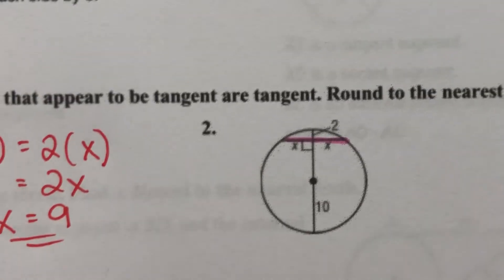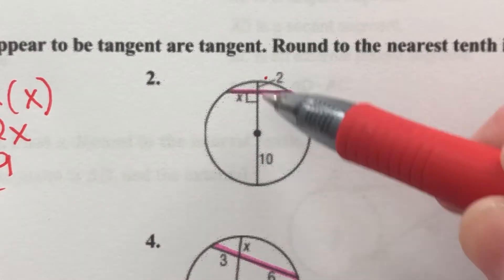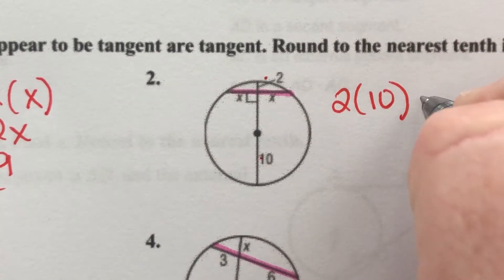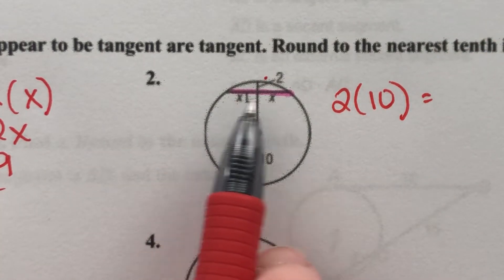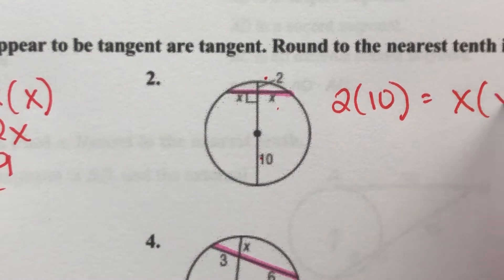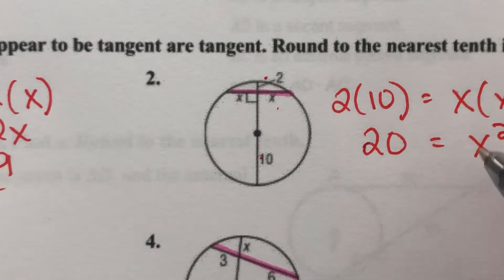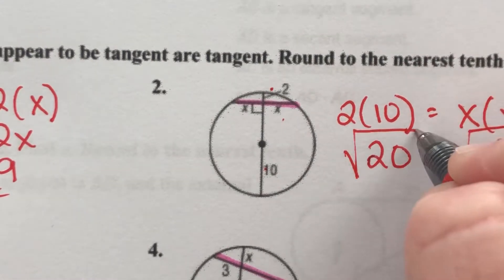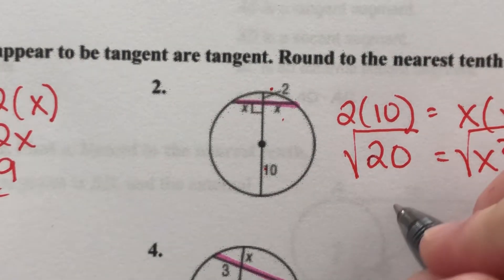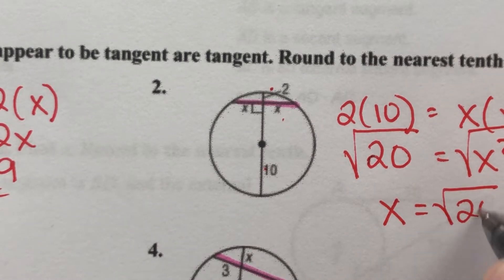Okay, number two, when I multiply two times 10, I should get the same answer as when I multiply X times X. So I should get 20 equals X squared. And then I'm going to take the square root. And so we're going to leave our answer as X equals square root of 20. Or we could simplify it to 4 times 5, 2 square root of 5. That's supposed to be a 2. 2 square root of 5. That would be an accurate answer.